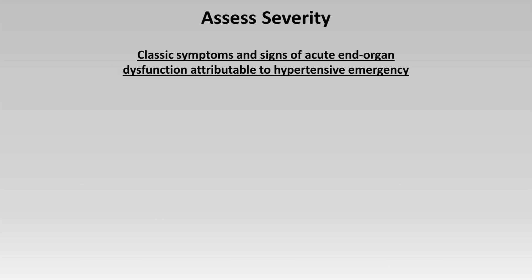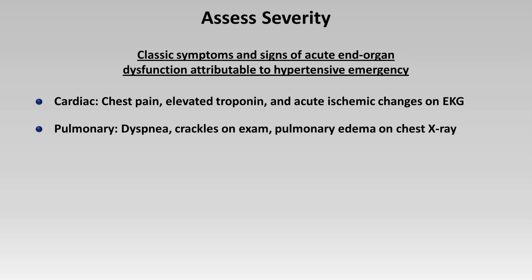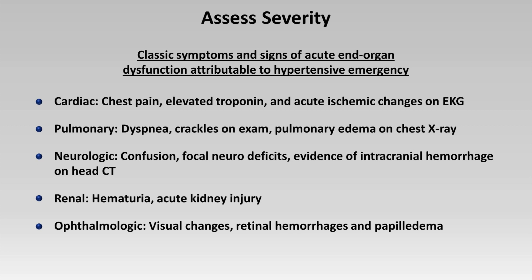The symptoms and signs of acute end-organ dysfunction map to six categories. In the heart: chest pain, elevated troponin, and acute ischemic changes on EKG. In the lungs: dyspnea, crackles, or pulmonary edema on chest x-ray. Neurologic dysfunction can manifest as confusion, focal neural deficits, or intracranial hemorrhage on head CT. Acute hypertension can lead to hematuria and acute kidney injury. The eyes can develop visual changes, retinal hemorrhages, and papilledema. And vascular problems can include symptoms and signs of aortic dissection. The presence of any of the above combined with a systolic above 180 or diastolic above 110 should be classified as a hypertensive emergency.